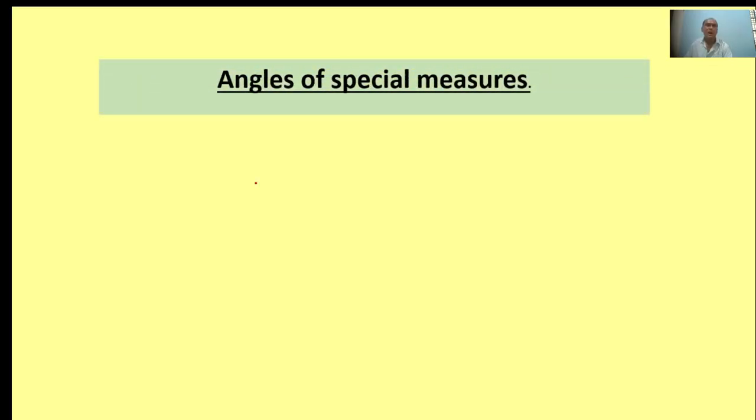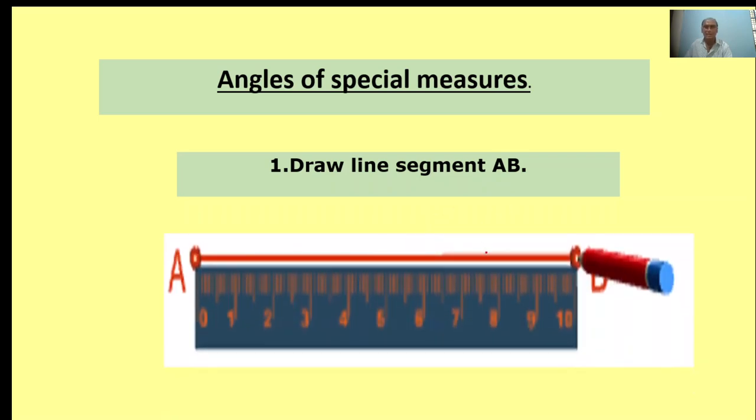Angles of special measures. Special measures are: 120 degrees, 90 degrees, 60 degrees, and 30 degrees. First, draw a line segment AB. Line segment AB, draw a line.